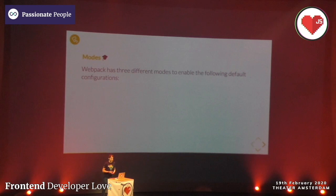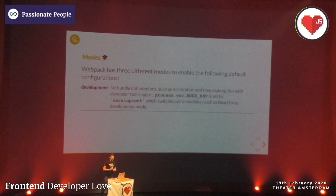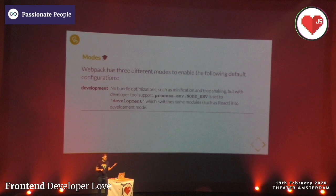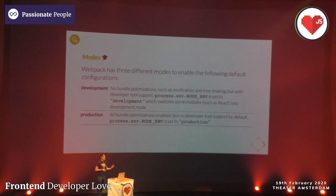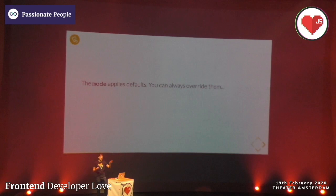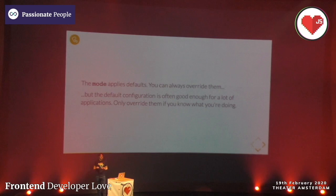Webpack has three different modes to enable default configurations, added in webpack 4 to make working with it easier. In development mode, there are no bundle optimizations such as minification and tree shaking, but we have full developer tool support. process.env.NODE_ENV is set to development, which switches libraries like React into development mode where they show nicer errors. In production mode, all bundle optimizations are enabled and there's no developer tool support by default, with NODE_ENV set to production. We also have 'none', which you rarely need - only for debugging webpack-specific problems. The mode applies defaults, but you can always overwrite them. Honestly, the default configuration is often good enough, so only overwrite defaults if you know what you're doing.